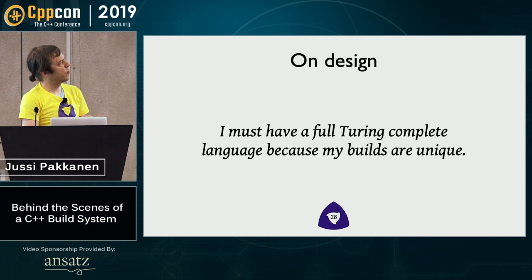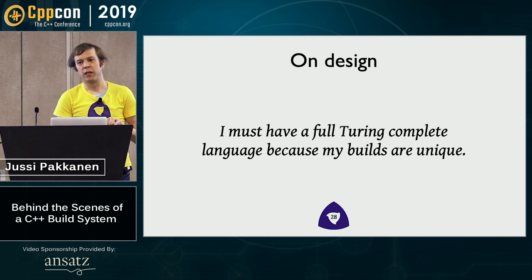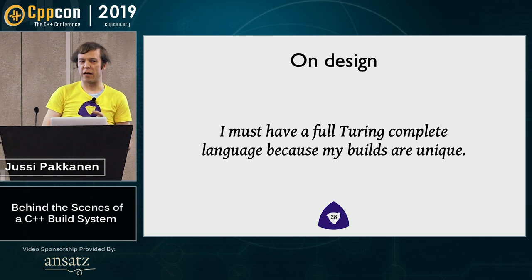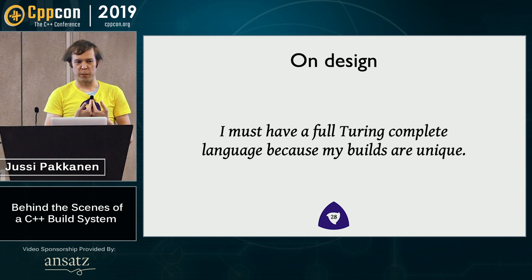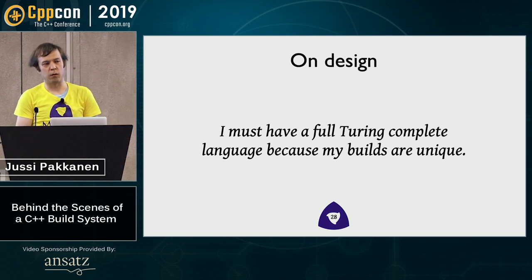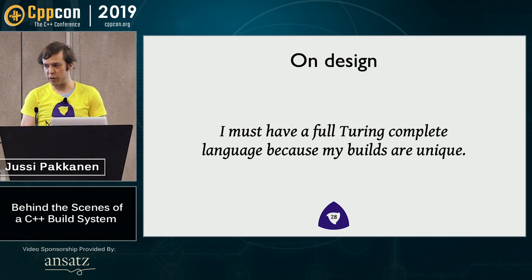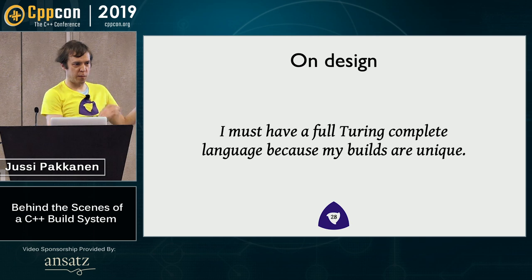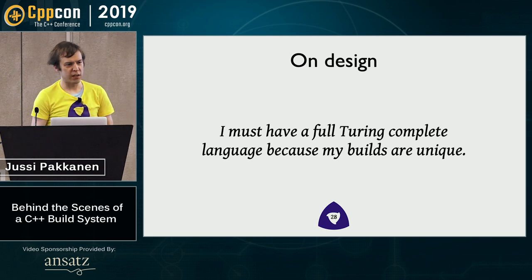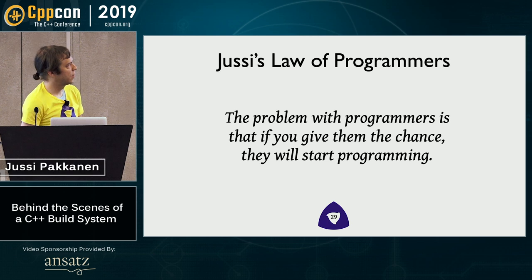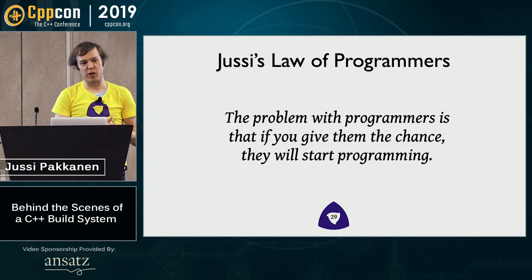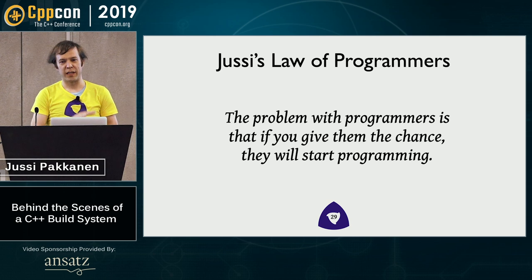The third thing to talk about is design — how do you design a build system? In my mind, a build system is how you describe your build; everything below that is an implementation detail. The most important design goal is: do you do a Turing-complete language or don't you? Lots of people say they have special needs and must have it. A law of programmers says that if you give them a chance, they will start programming. And there's a corollary: there is no limit to the amount of work a programmer is willing to do to not read documentation.